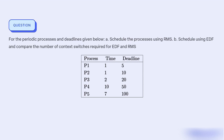Our objective is to schedule the given processes using Rate Monotonic Scheduling (RMS) and Earliest Deadline First (EDF) algorithms, and compare the number of context switches required for each.